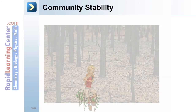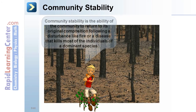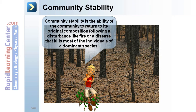Community stability is the ability of the community to return to its original composition following a disturbance like fire or disease that kills most of the individuals of a dominant species.